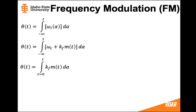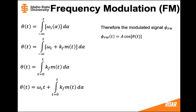If we want to find the integral of the message, we might not always have information about the message before time zero, so we can simplify this to an integral from 0 to t. This gives us an angle theta(t) which is omega_c*t plus the integral of kf times the message from 0 to t. Substituting in, the frequency modulated signal is A times the cosine of omega_c*t plus kf multiplied by the integral of the message.